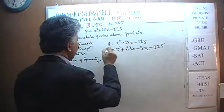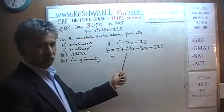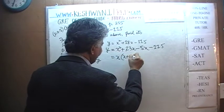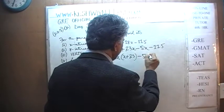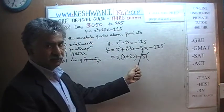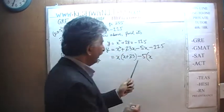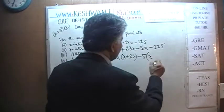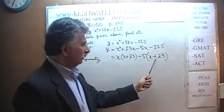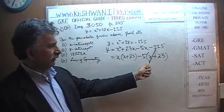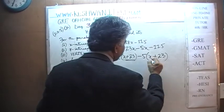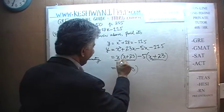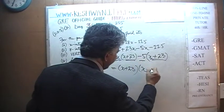Now we have a common factor of (x + 23) from both groups. Taking it out gives us (x + 23)(x − 5). When the equation of a parabola is written in this factored form, it gives us the x-intercepts by visual inspection. We can clearly see that when x = −23, y = 0, and when x = +5, y = 0 — because in each case one factor becomes zero, and zero times anything is zero.